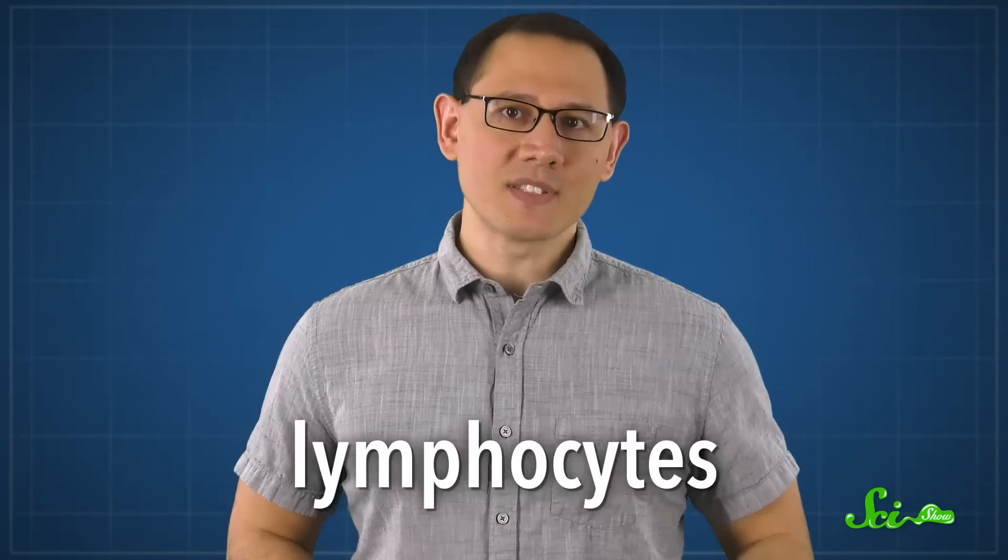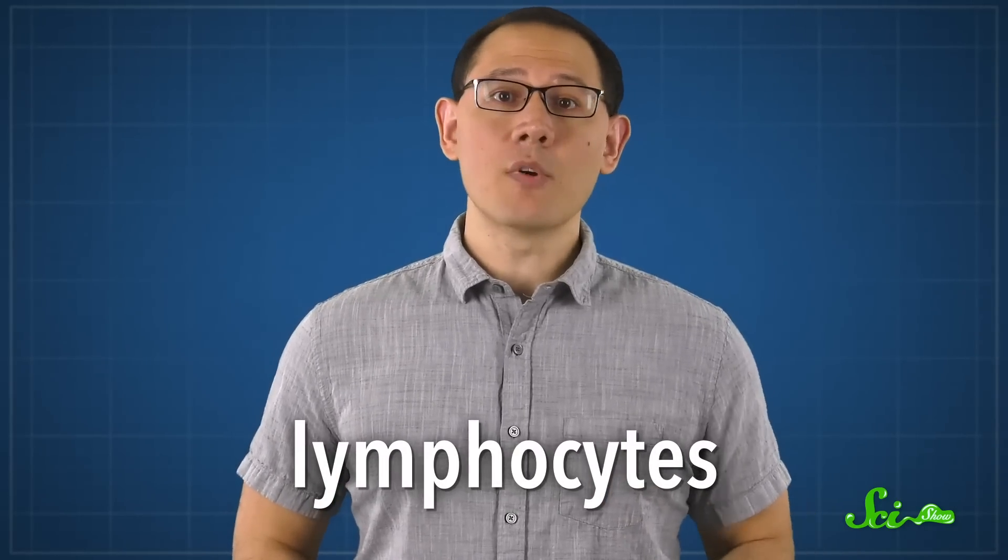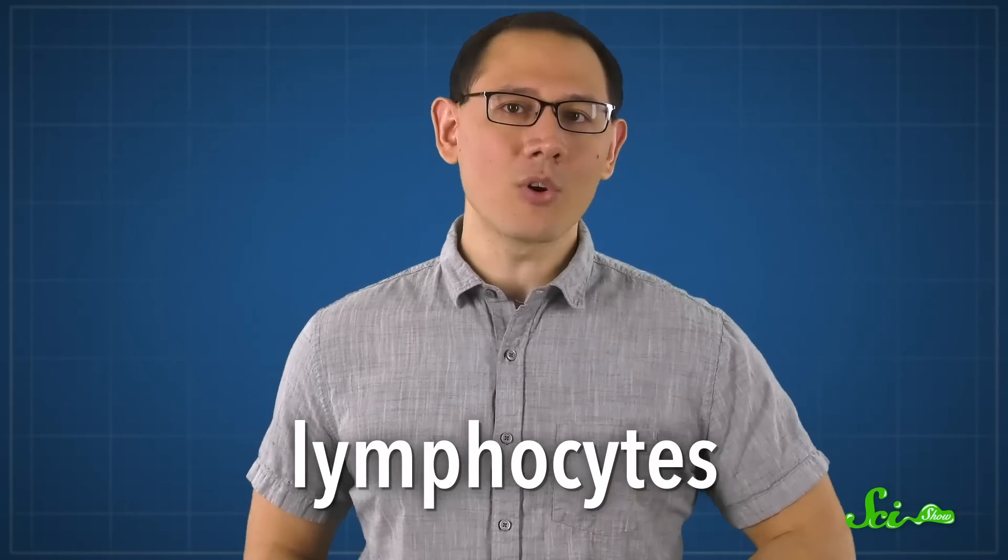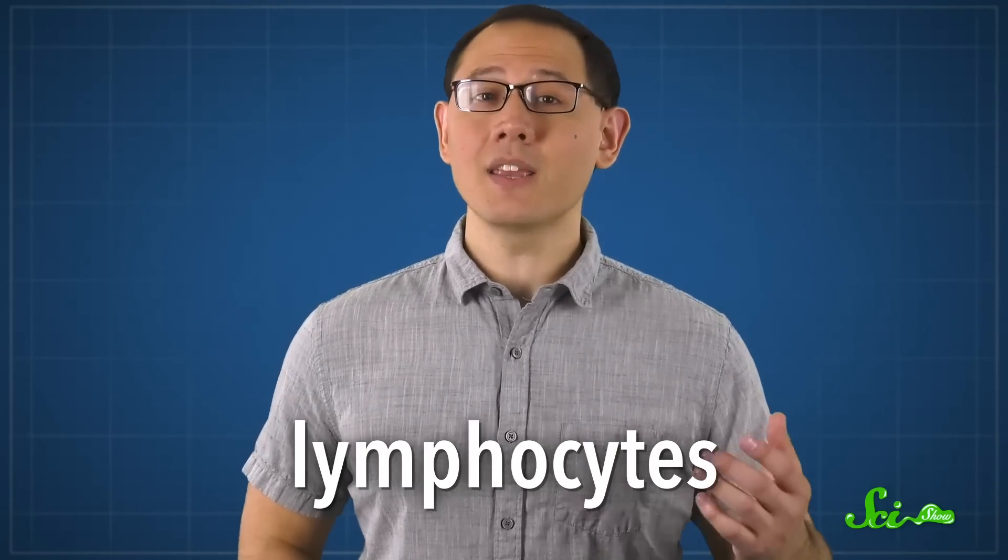Among the most important weapons in the adaptive immune system are lymphocytes, special white blood cells that can remember what's tried to take you down before, so next time it comes around, your body is ready.